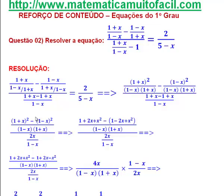E no denominador eu vou mexer também. O que eu fiz aqui? 1 menos 1 vezes menos 1 — isso vai dar menos 1 mais x. Lembra de trocar o sinal: 1 vezes menos 1 dá menos 1, e menos x vezes menos 1 dá mais x. Tudo isso sobre o denominador 1 menos x. Isso é igual a 2 sobre 5 menos x.